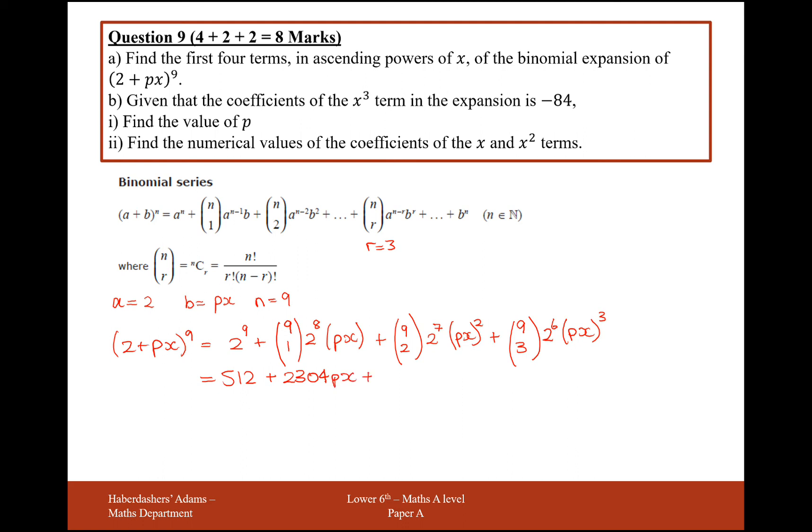The next term here is 9 choose 2 times 2 to the 7, so you get there 4,608 p squared x squared. And then for the last one here, you get 5,376 p cubed x cubed. Okay, there we are, that's our answer to part a.